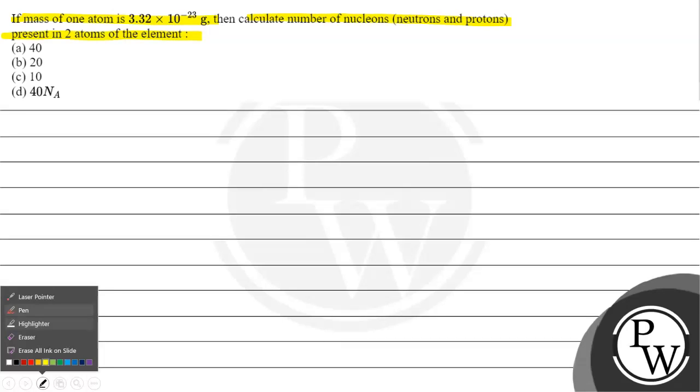Option A: 40, option B: 20, option C: 10, option D: 40 times Avogadro's number.